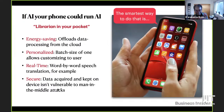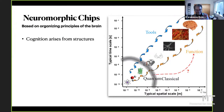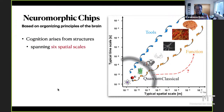That's where a neuromorphic approach to computing comes in. It turns out that our brains are super energy efficient — there's no competition. It's orders of magnitude less energy per calculation than what we can do right now. That's the inspiration for what I call neuromorphic chips — chips based on the organizing principles of the brain, proposed by Carver Mead in the mid-80s. The challenge is that cognition arises from structures that span six spatial scales, from the molecular level — nanometer or angstrom scale — all the way to your entire brain, which is several centimeters.